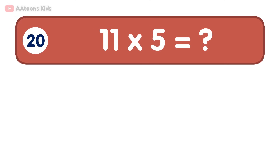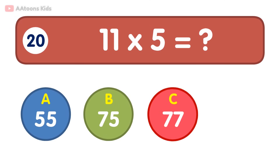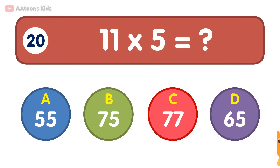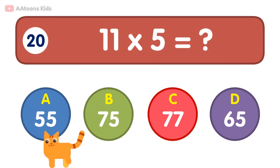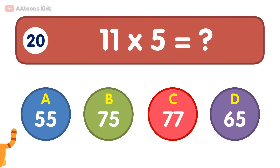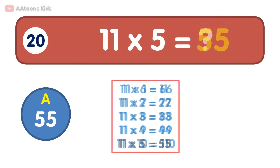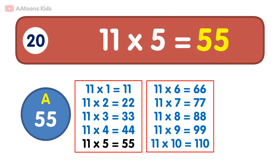11 times 5 is equal to 55. 11 times 5 is 55.